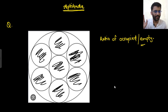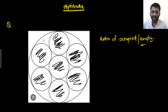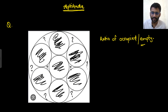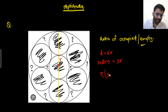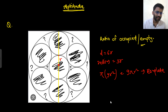The question asks for the ratio of occupied to empty. The occupied ones are shown in black, and the rest is empty. The approach is: this will be the diameter of the complete circle. If each small circle has radius r, the complete circle has a diameter of 6r, meaning its radius is 3r. So the total area would be π × (3r)² = 9πr².